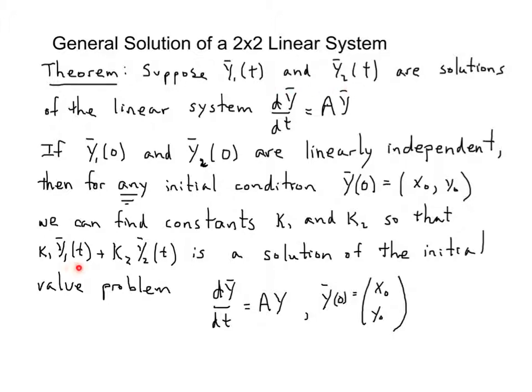But the fact that these two are linearly independent at time 0 means that we can also find constants k₁ and k₂ so that this system at time 0 will pass through the point (x₀, y₀). And so here's how we phrase initial value problems for systems.